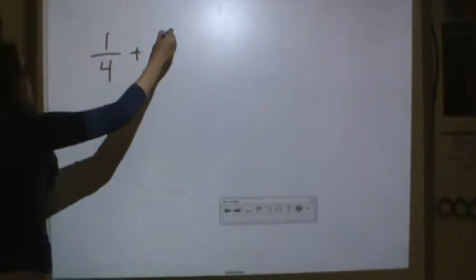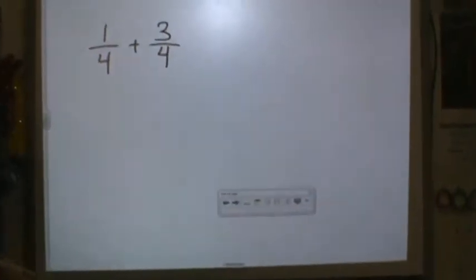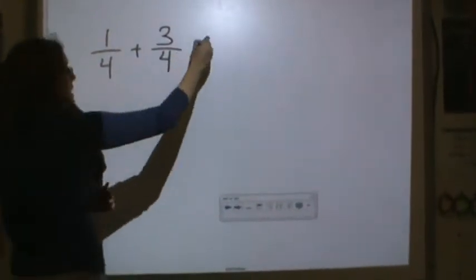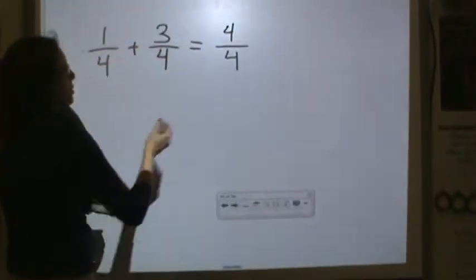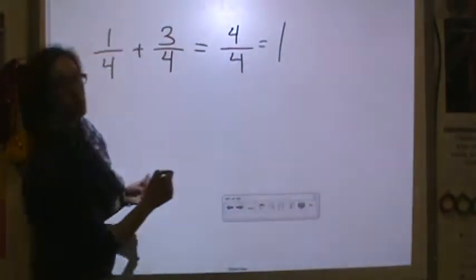Alright, so let's do our first example. So I'm going to do one-fourth plus three-fourths. Remember the denominators stay the same. So I have one plus three is four-fourths. Now remember four-fourths is equal to one whole.